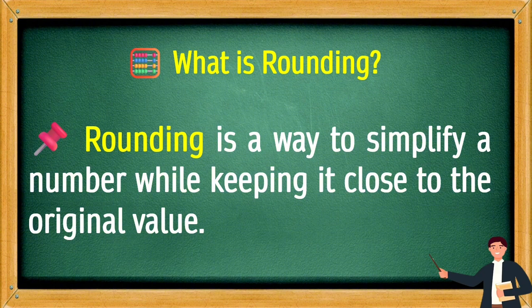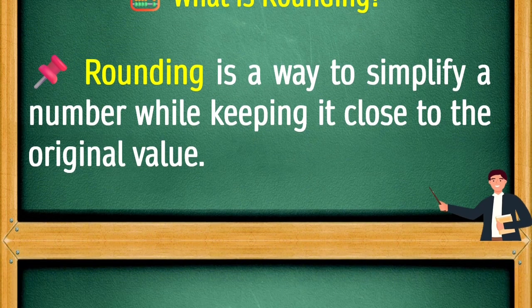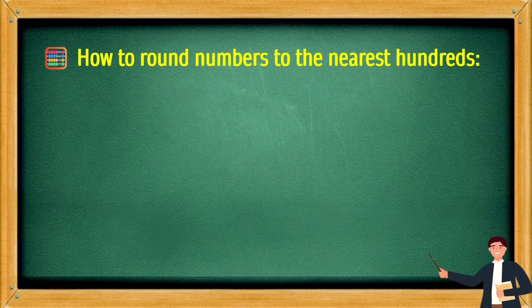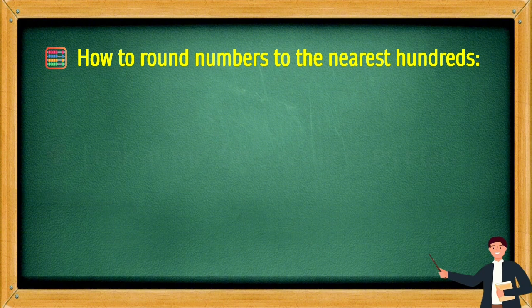Rounding is a way to simplify a number while keeping it close to the original value. How to round numbers to the nearest hundreds?